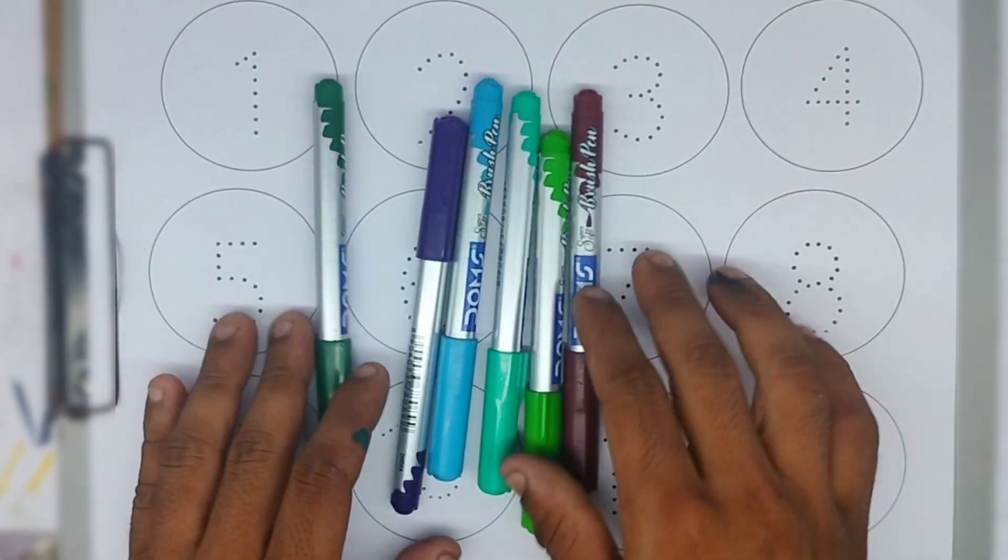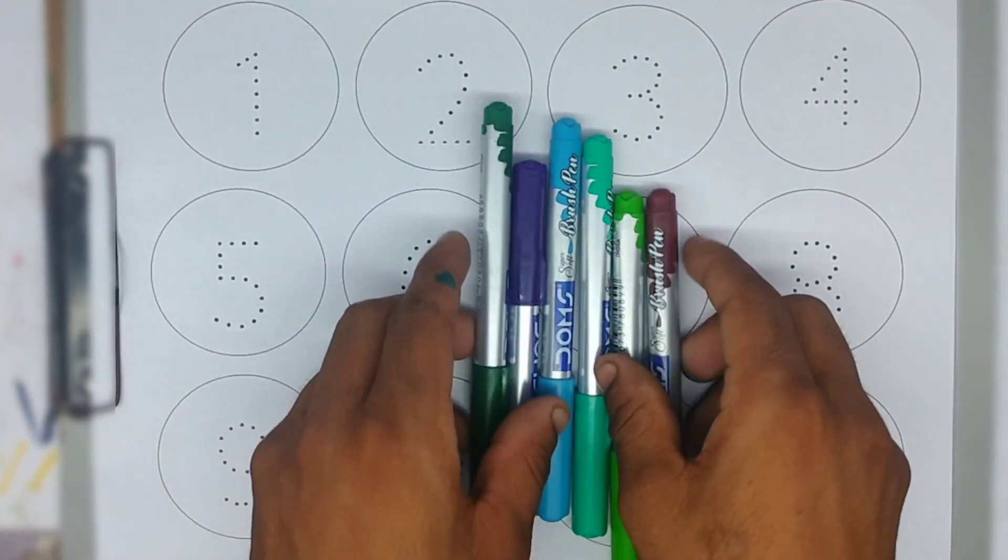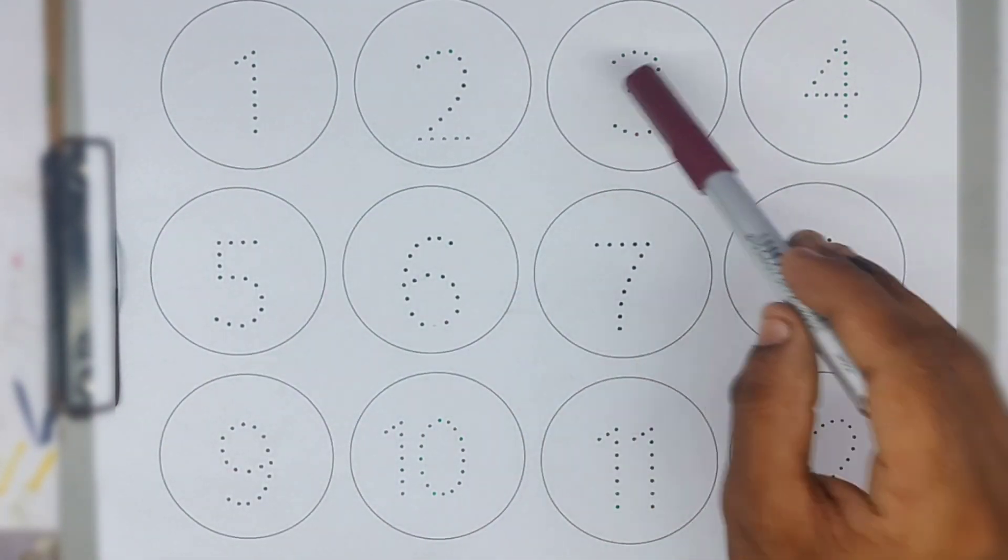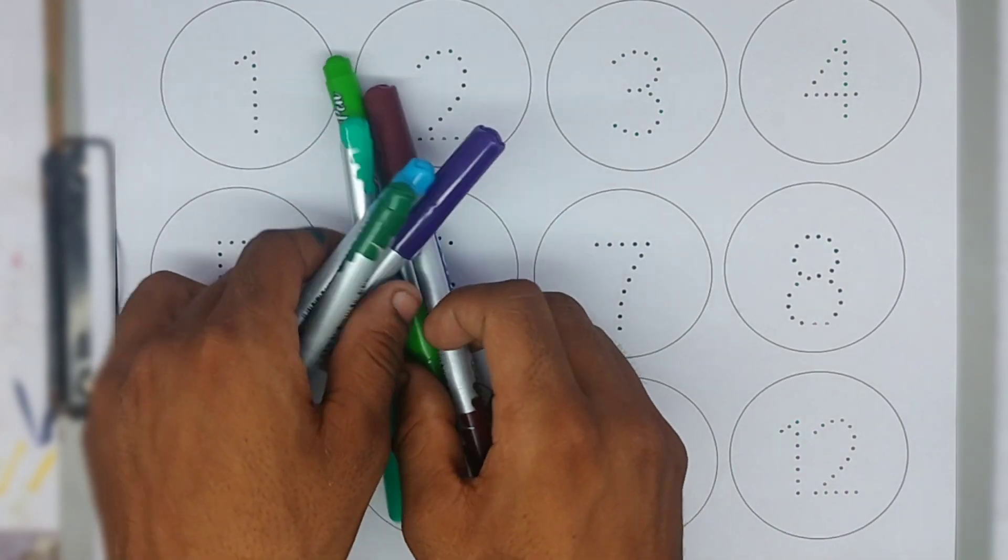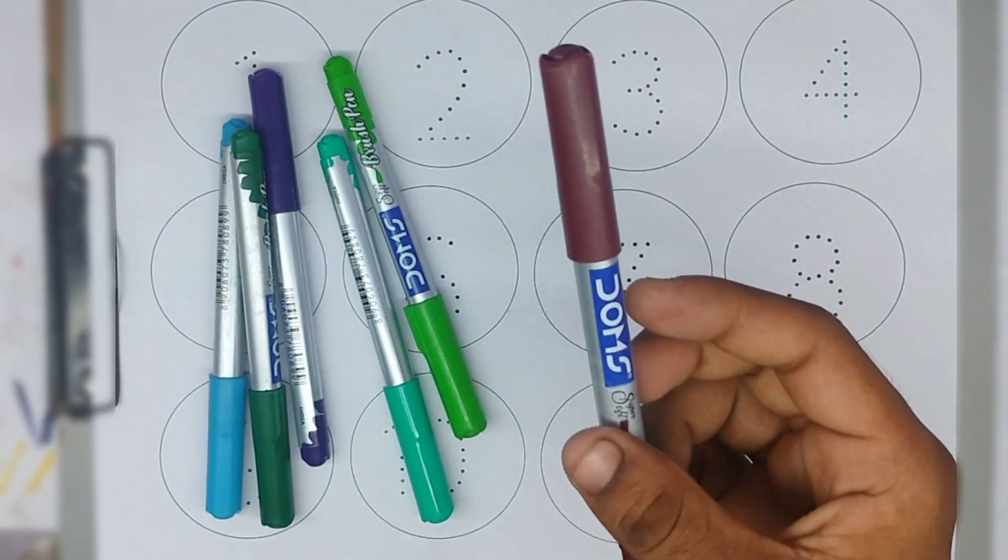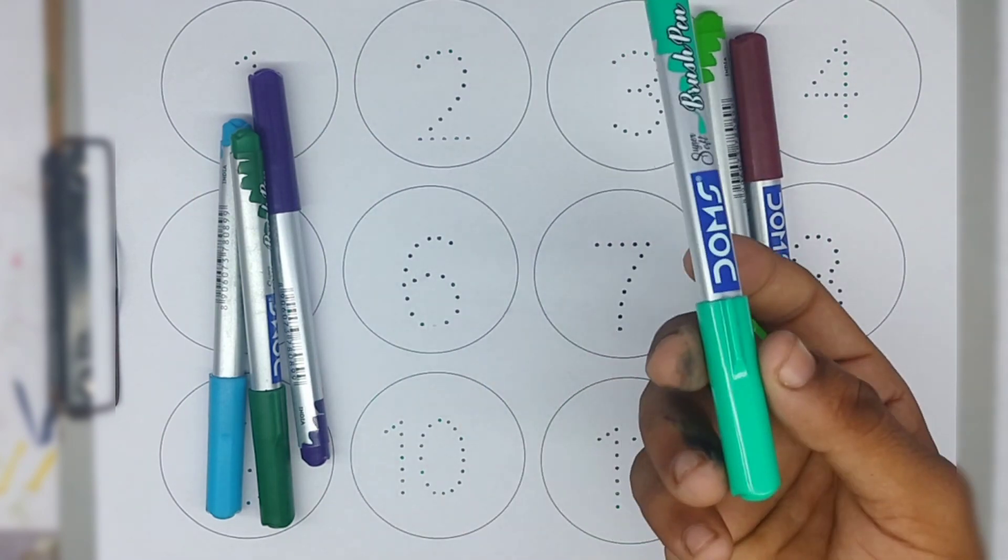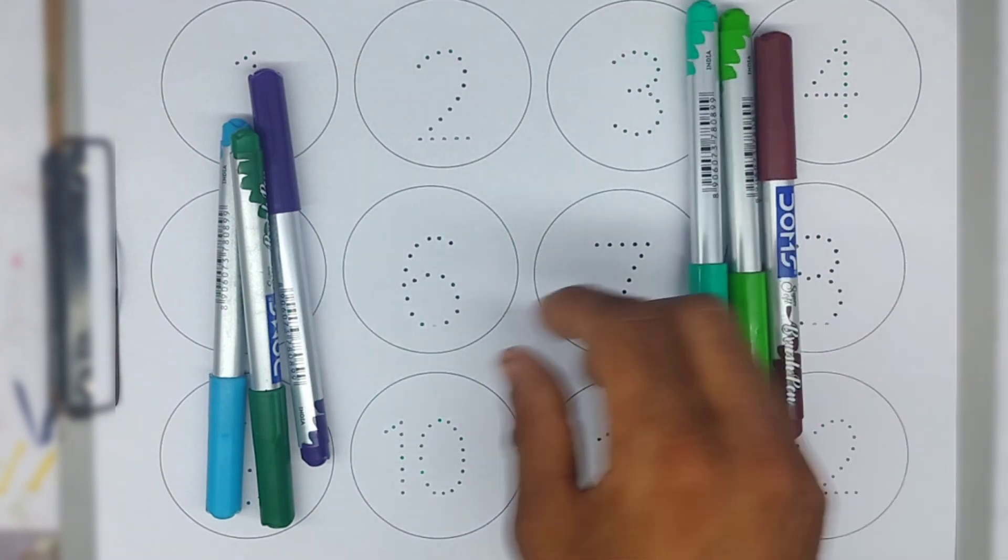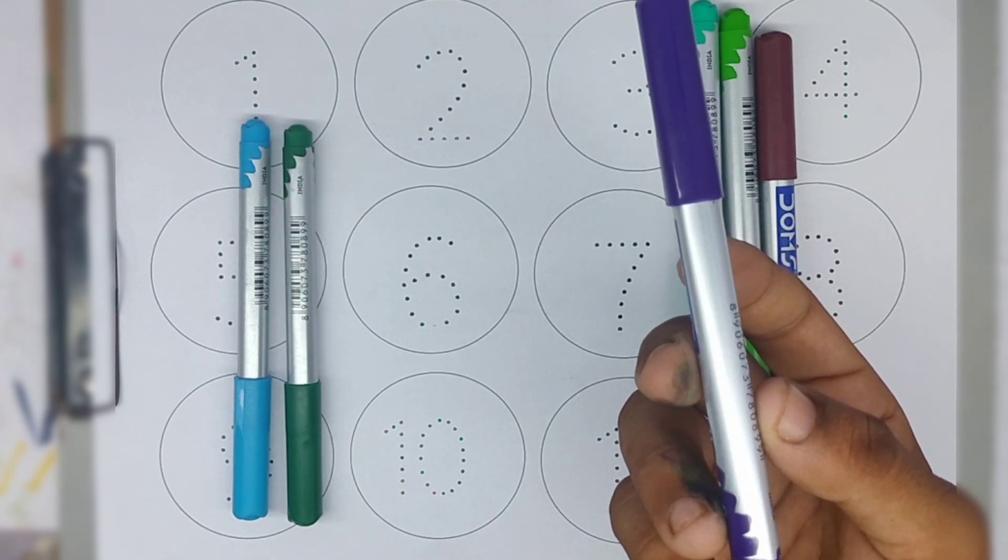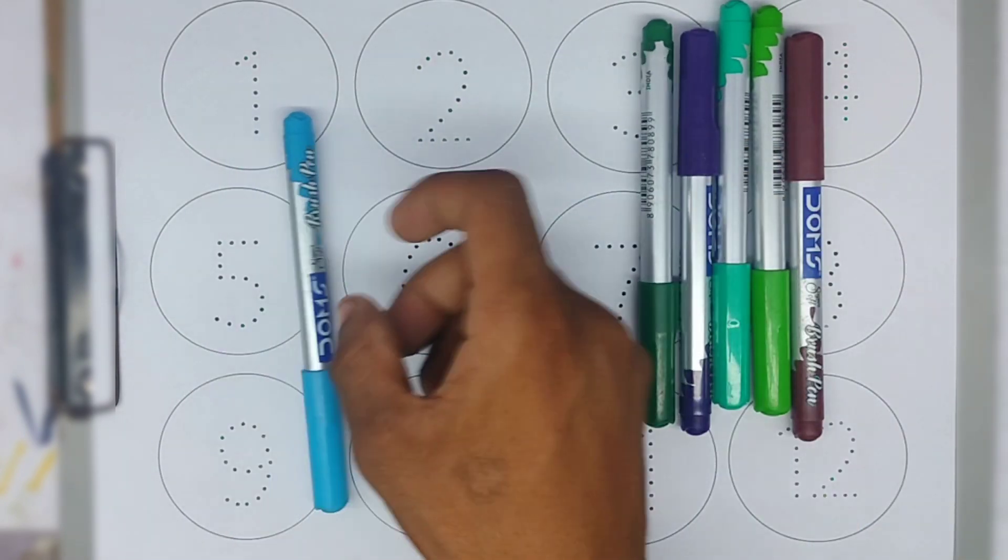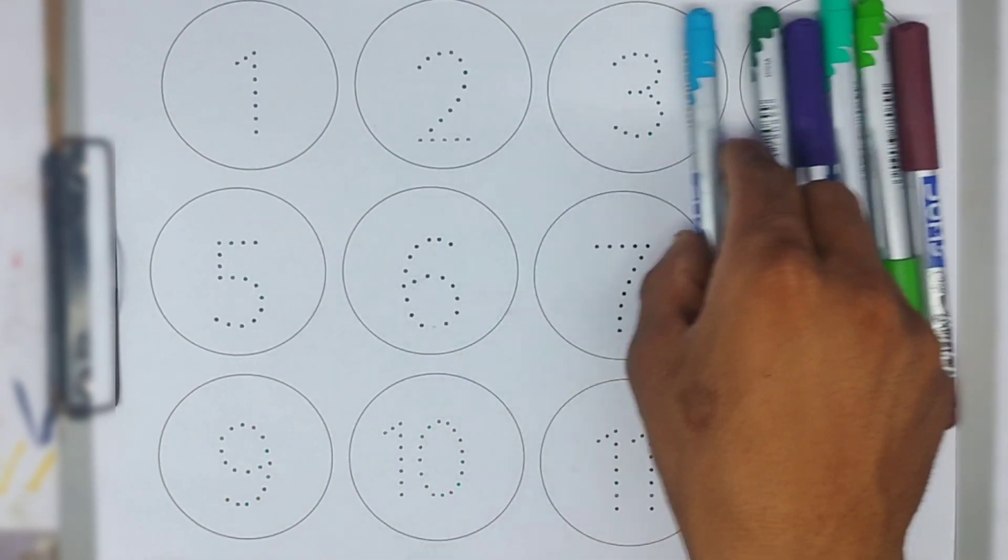Hello kids, how are you? Today learn counting numbers: 1, 2, 3, 4. Colors name: brown color, parrot color, light blue color, purple color, green color, sky blue color.